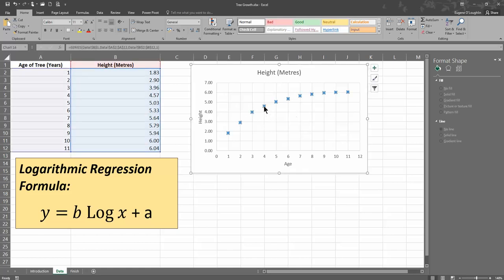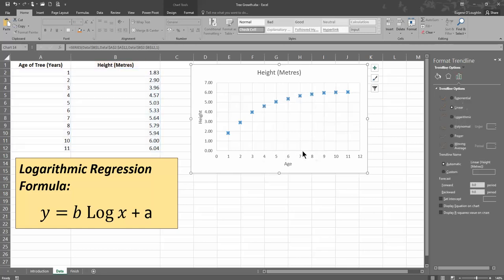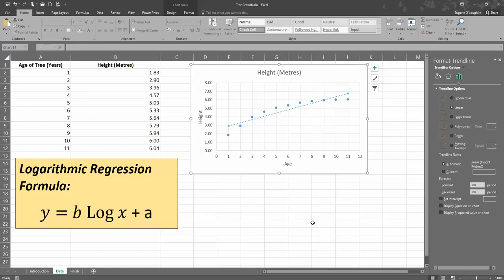So I'm going to select here with the left mouse button any of the points on the chart. And I'm going to right click and choose add trendline. And when I do that, you can see that Excel puts in a straight line here. And if you look at the format trendline options over on the right hand side, you can see that the default trendline is a linear trendline.